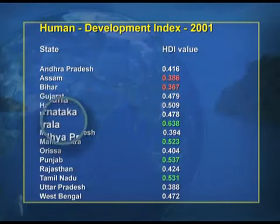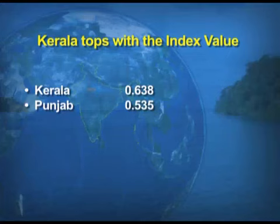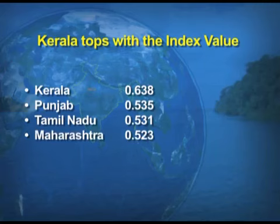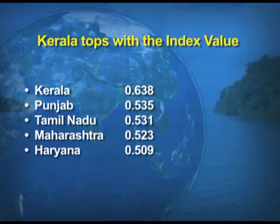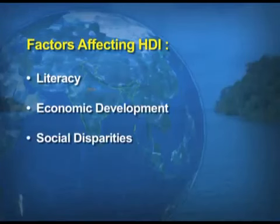A table shows the human development index for various states. Kerala has the highest HDI at 0.638, largely due to its high literacy rate. Other states include Punjab at 0.535, Tamil Nadu at 0.531, Maharashtra at 0.523, and Haryana at 0.509. The factors affecting HDI are: literacy, economic development, and social disparities prevailing in society.